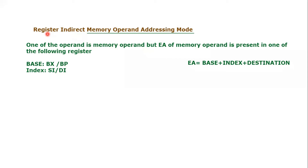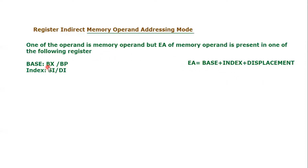The quality of this addressing mode is that one of the operands should be a memory operand, but the effective address of the memory operand will be present in either of these registers. The effective address is calculated by the summation of base plus index plus displacement. In the case of register indirect, only one of them should be present — base or index. For base, we take the value from BX or base pointer register, and for index, we take the value from source index or destination index register.